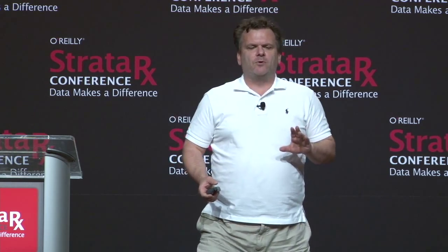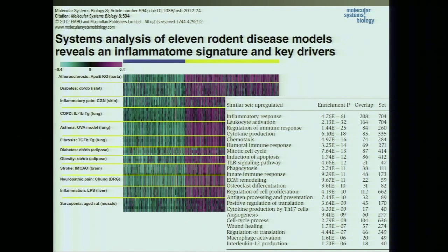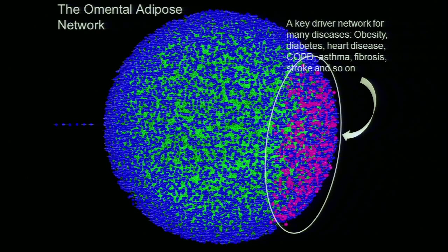This is the network that results. Once you have these sorts of networks, you can start projecting all the different disease conditions — asthma, COPD, Alzheimer's, obesity, diabetes, heart disease, breast cancer — generating signatures of what's happening at the molecular level and projecting them onto these networks. What we found across all these different diseases is that a particular network in omental fat, those nodes highlighted in pink, were consistently showing up as causal for the disease — a common mechanism affecting a broad range of diseases from obesity and diabetes to Alzheimer's, COPD, asthma, cancer, IBD, and rheumatoid arthritis.